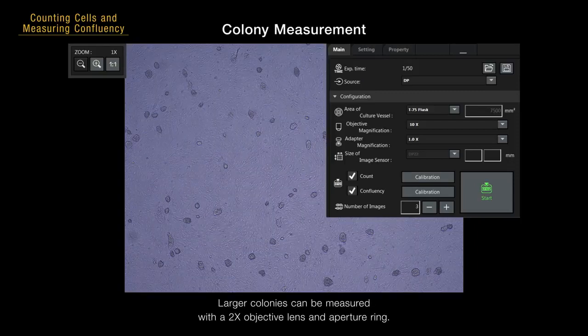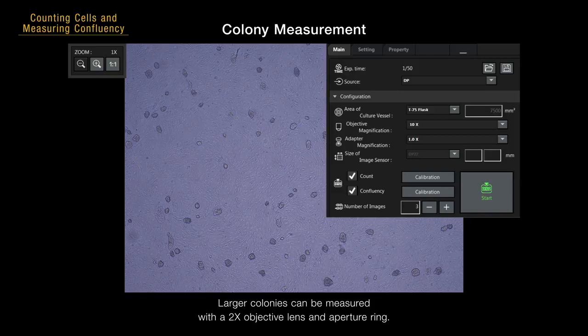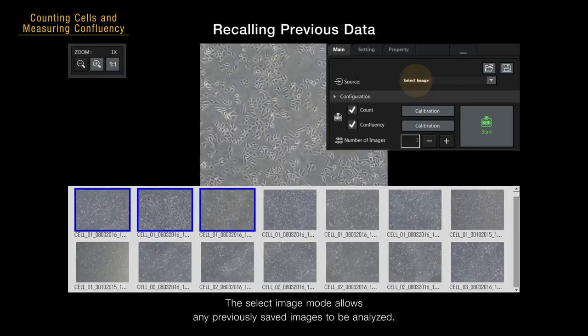Larger colonies can be measured with a 2x objective lens and aperture ring. The select image mode allows any previously saved images to be analyzed.